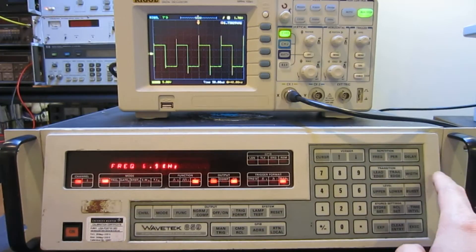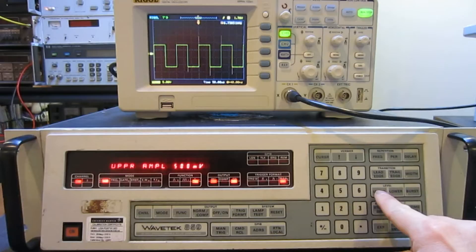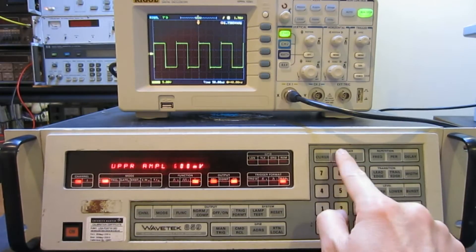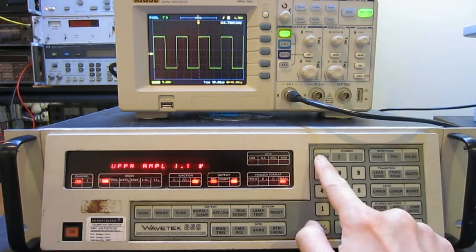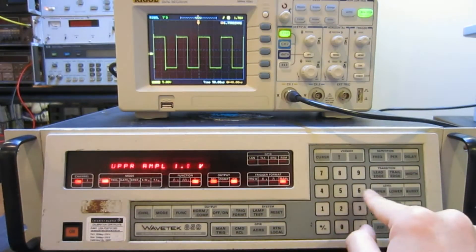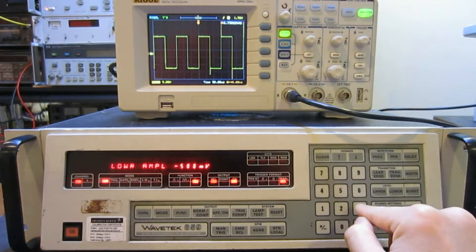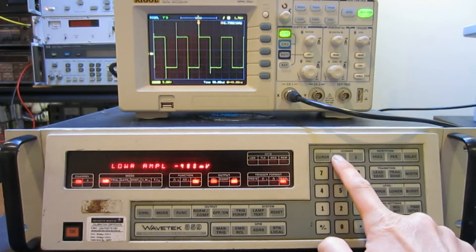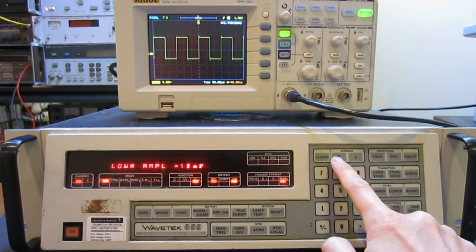Let's change the time base a little bit. Also, as I showed earlier, you can change the level. Right now the upper level is 500 millivolts, we can change this to, let's say 1 volt. You can also change the lower amplitude, it's still 500, so we can reduce this as well.